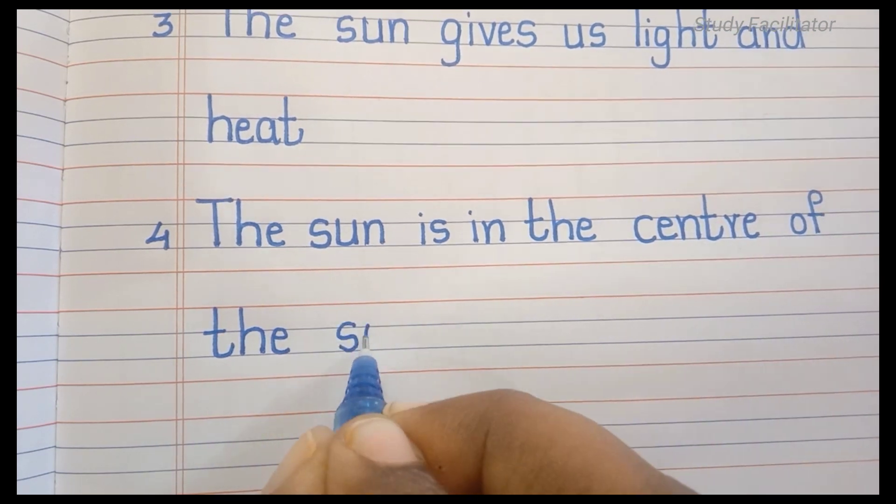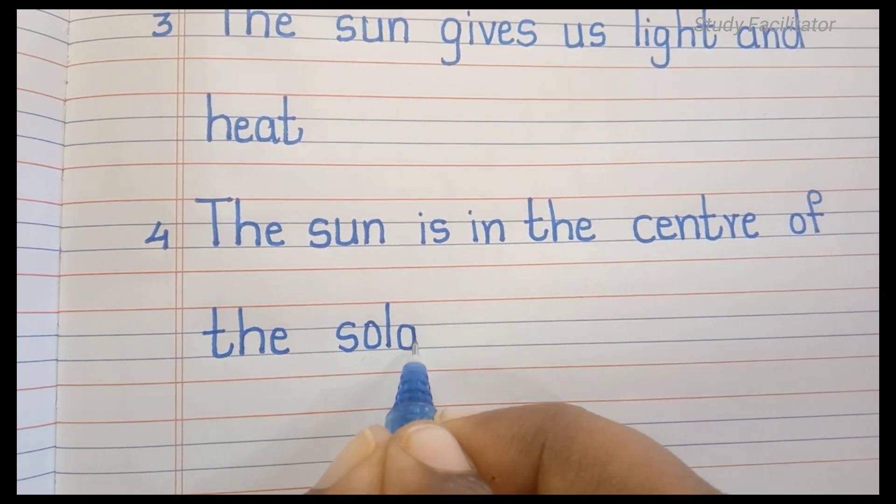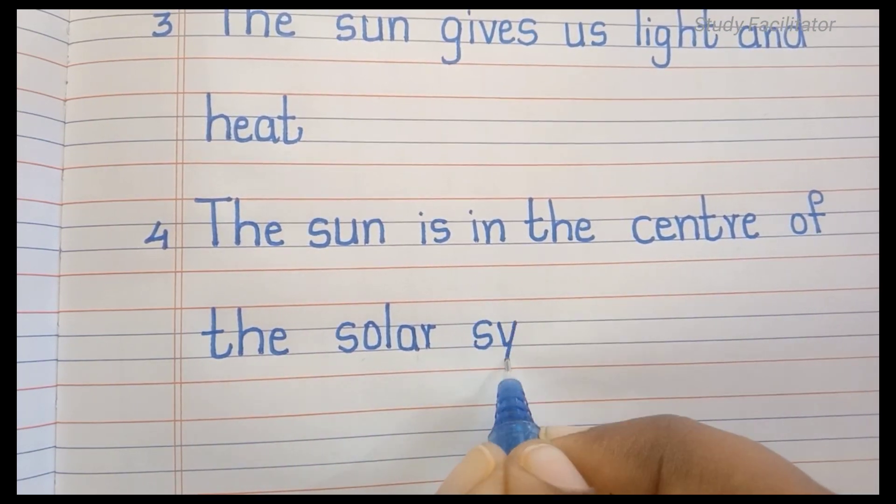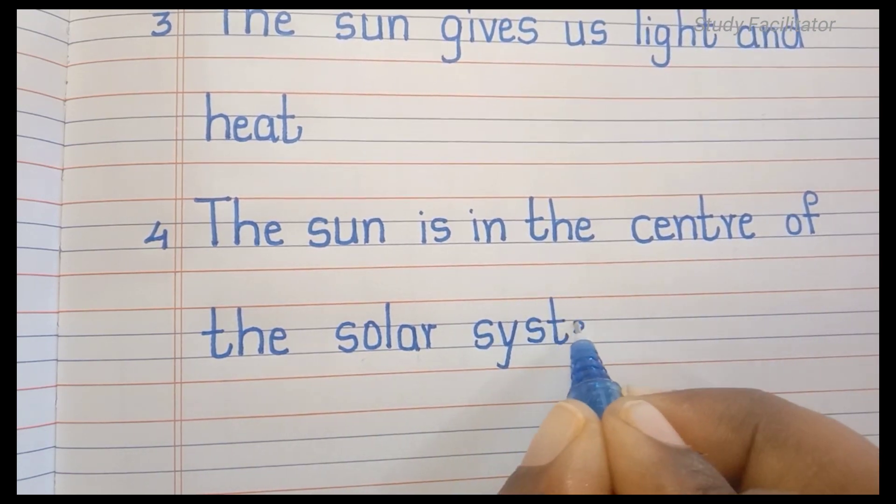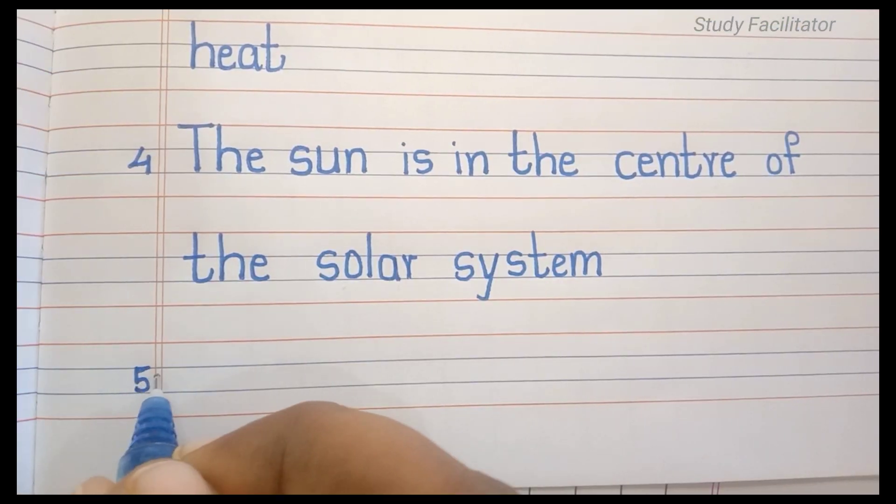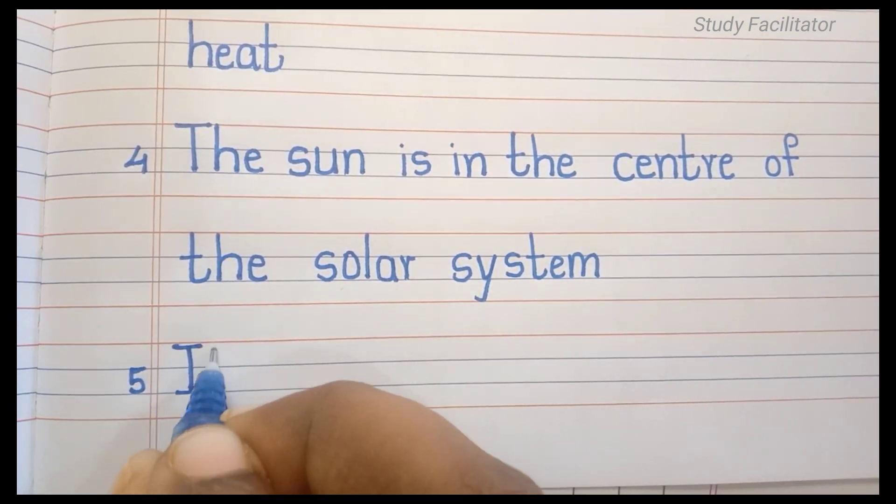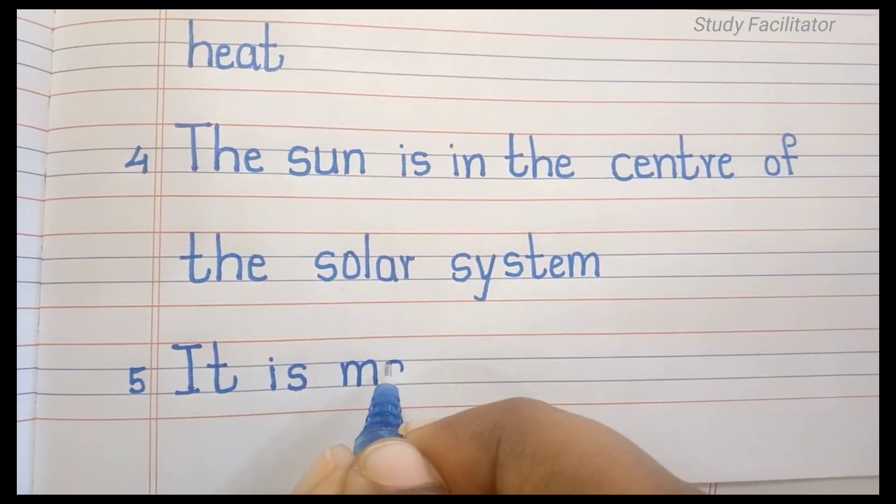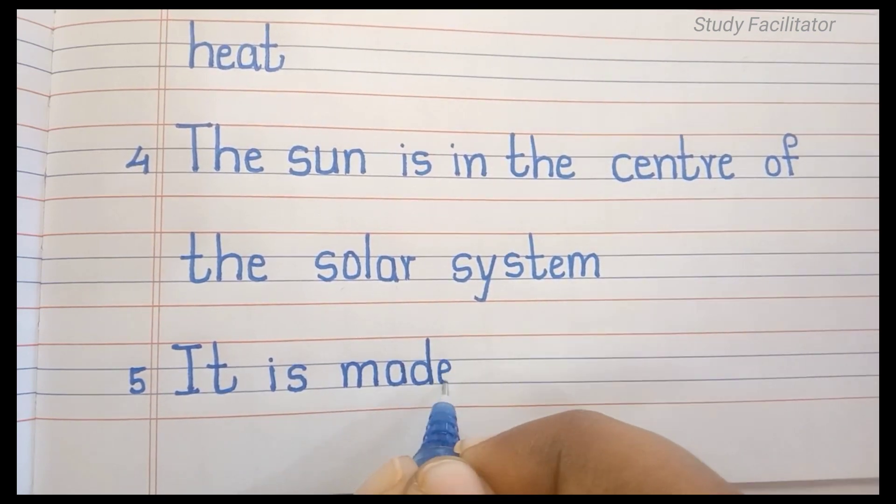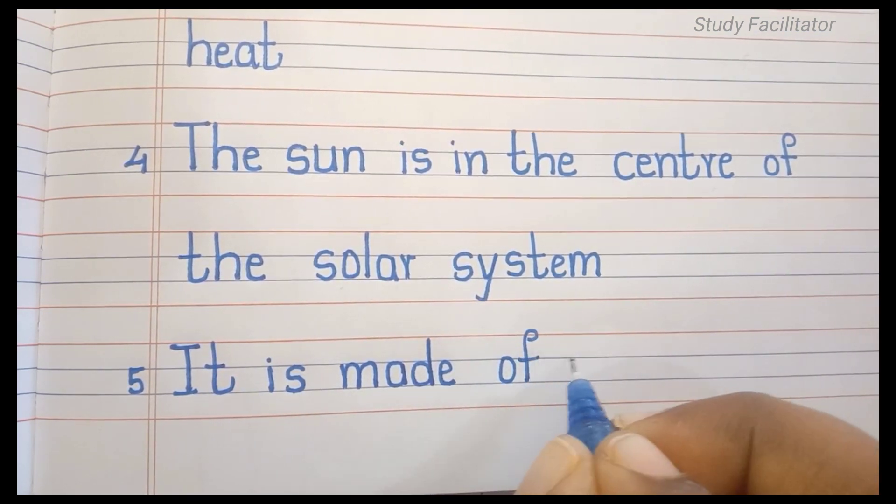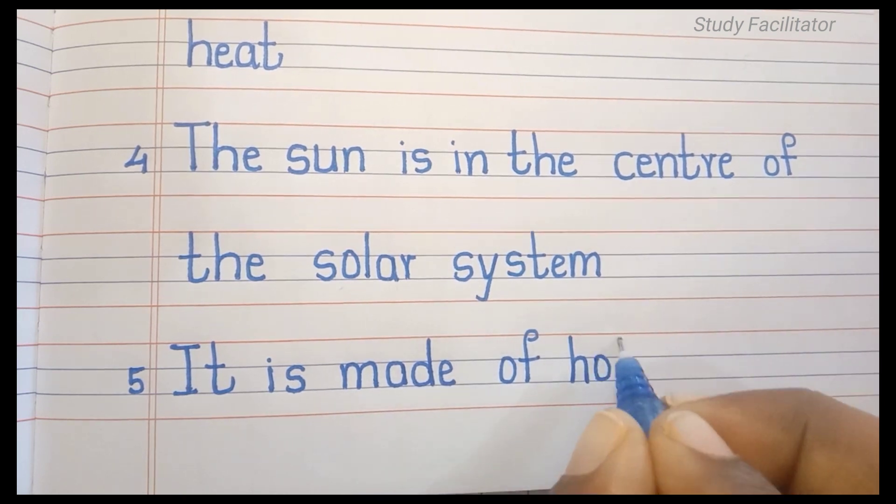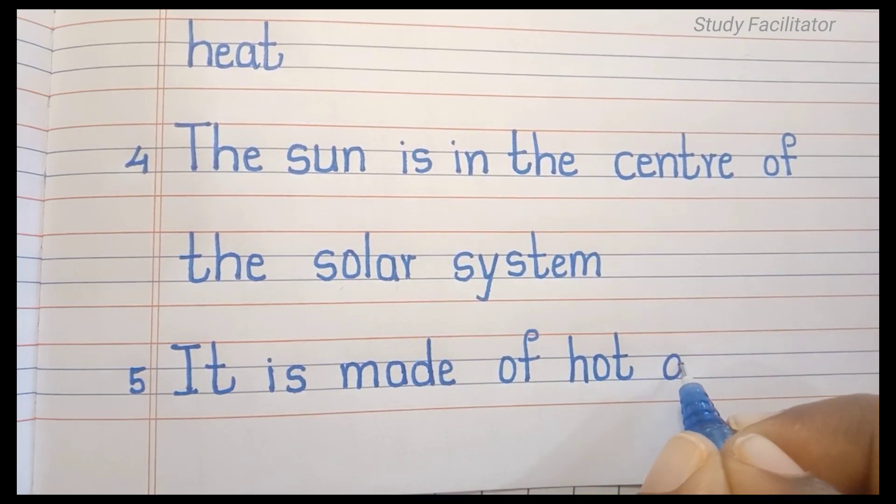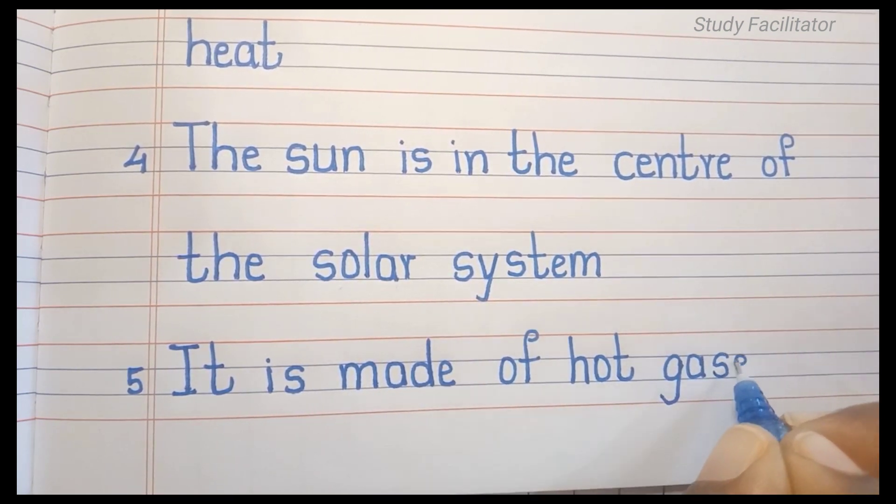The Sun is in the center of the solar system. It is made of hot gases.